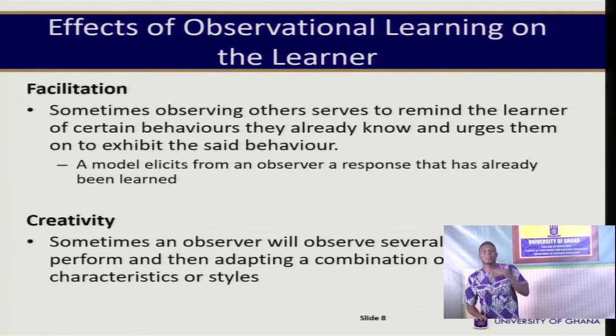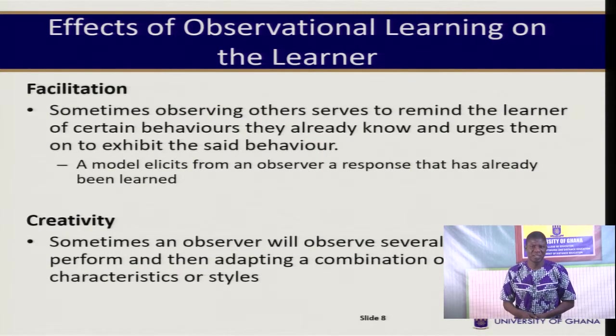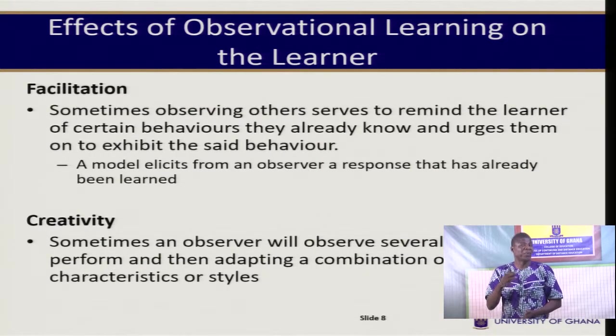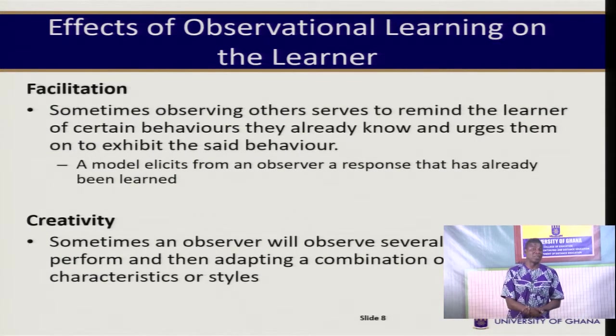The next effect is facilitation. Sometimes observing others serves to remind the learner or observer of certain behaviors they already know and urges them to exhibit that behavior. For instance, a model elicits from an observer a response that has already been learned by the observer long ago, but the recent observation of the model's behavior is what facilitates or brings up that kind of skill in the person, encouraging them to also exhibit it.